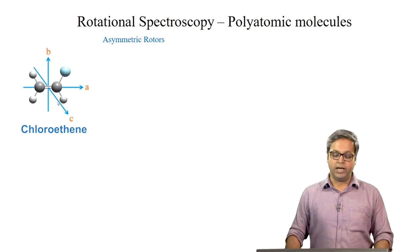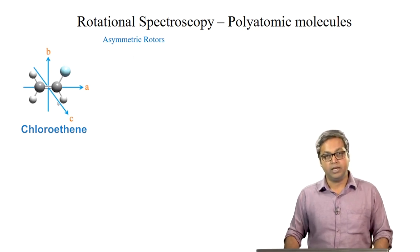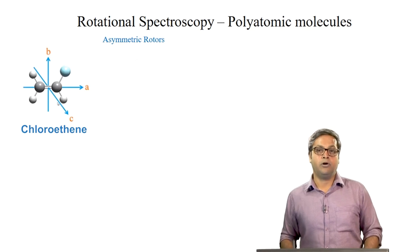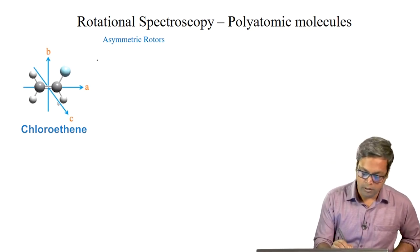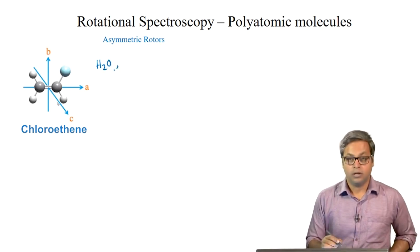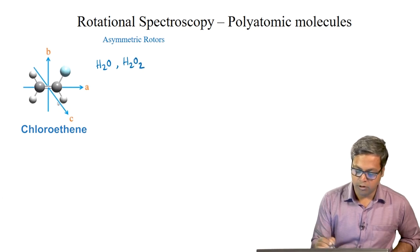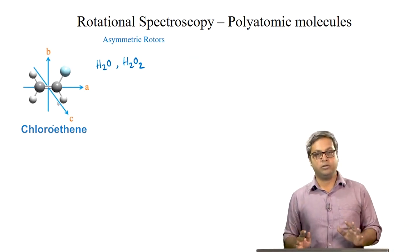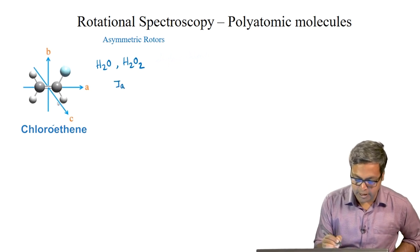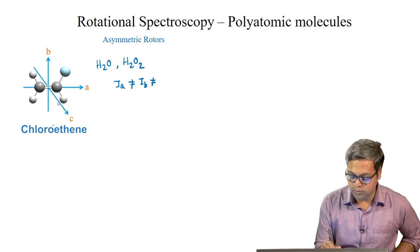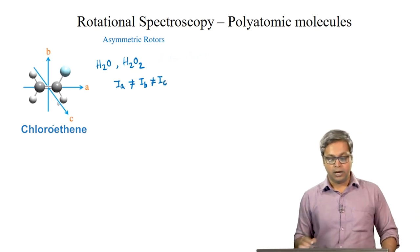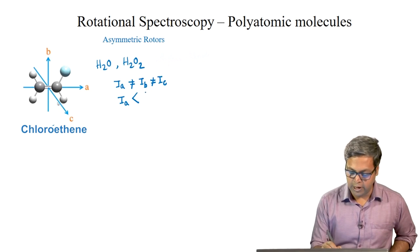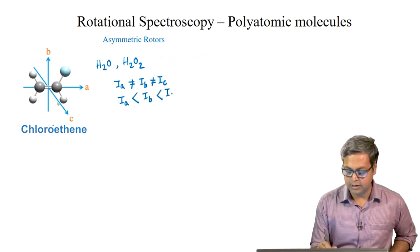The final category is asymmetric top or asymmetric rotor. In fact, a vast majority of molecules are asymmetric. Examples include water (H2O) and hydrogen peroxide. For an asymmetric rotor, IA is not equal to IB, IB is not equal to IC, and IA is less than IB which is less than IC.